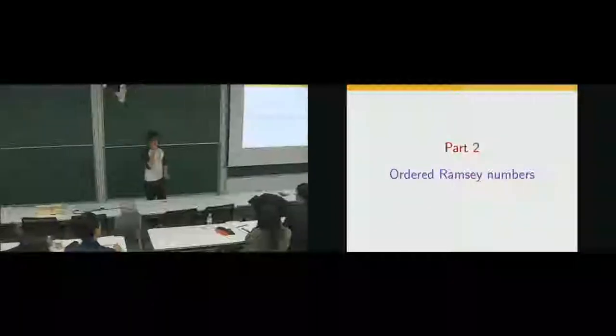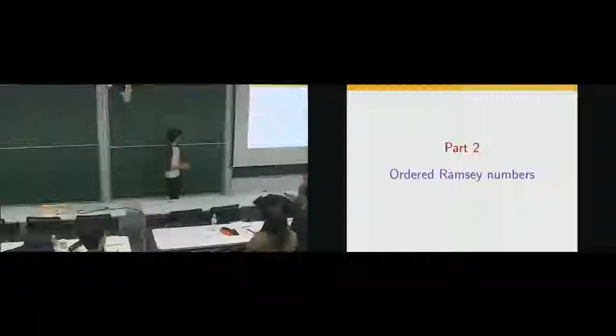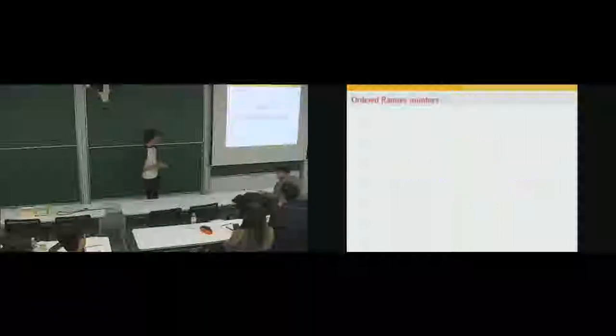That was the classical part about Ramsey numbers. Now let's talk about ordered Ramsey numbers — Ramsey numbers of graphs with a linearly ordered vertex set. An ordered graph is just a graph together with a total order of its vertices. If I have one ordered graph H, I say it is an ordered subgraph of another ordered graph G if the underlying graphs are in the subgraph relation and the orderings of the vertices are in the suborder relation.